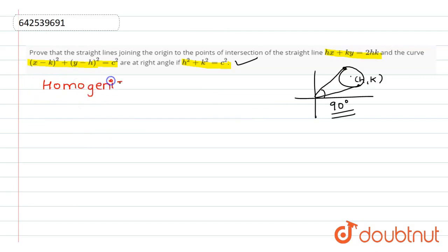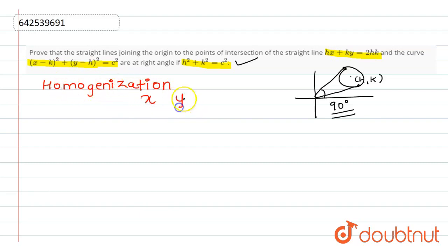So we are going to solve this using a method known as homogenization. What is homogenization? In homogenization, we make the degree or the power of each and every term in the equation the same for the variables x and y. For example, if one term has power 3 and another has power 2, we have to make the power the same everywhere.